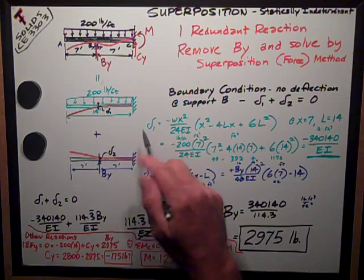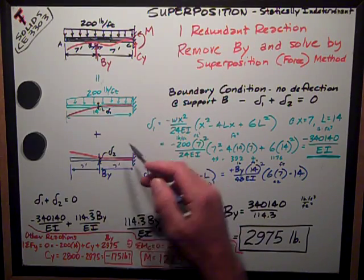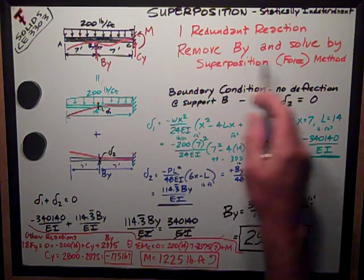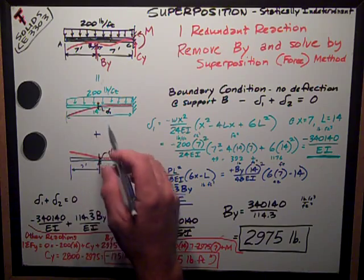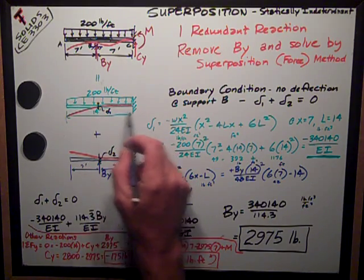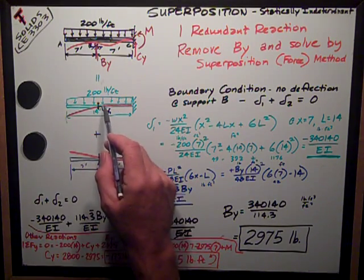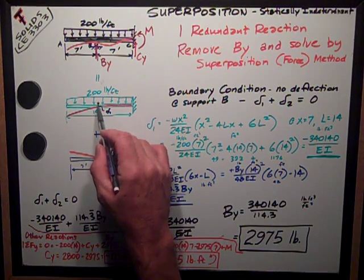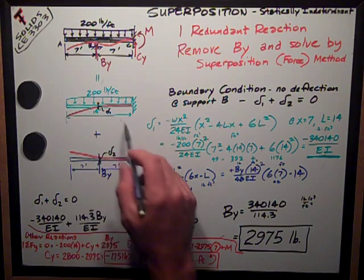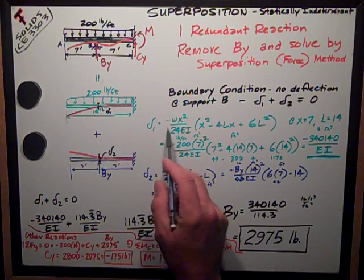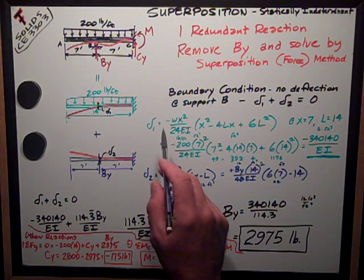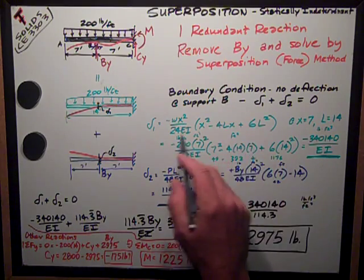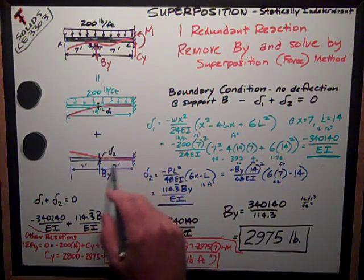I break it up into two parts. The deflection due to just removing the support at BY at B, just got a simple cantilever deflecting a certain amount due to uniform load. I've got to know the deflection at midpoint, midspan of that cantilever. That's what I call delta-1, and there's a table in the back of the book, Appendix C, where you've got a lot of these deflection equations written out for various situations.